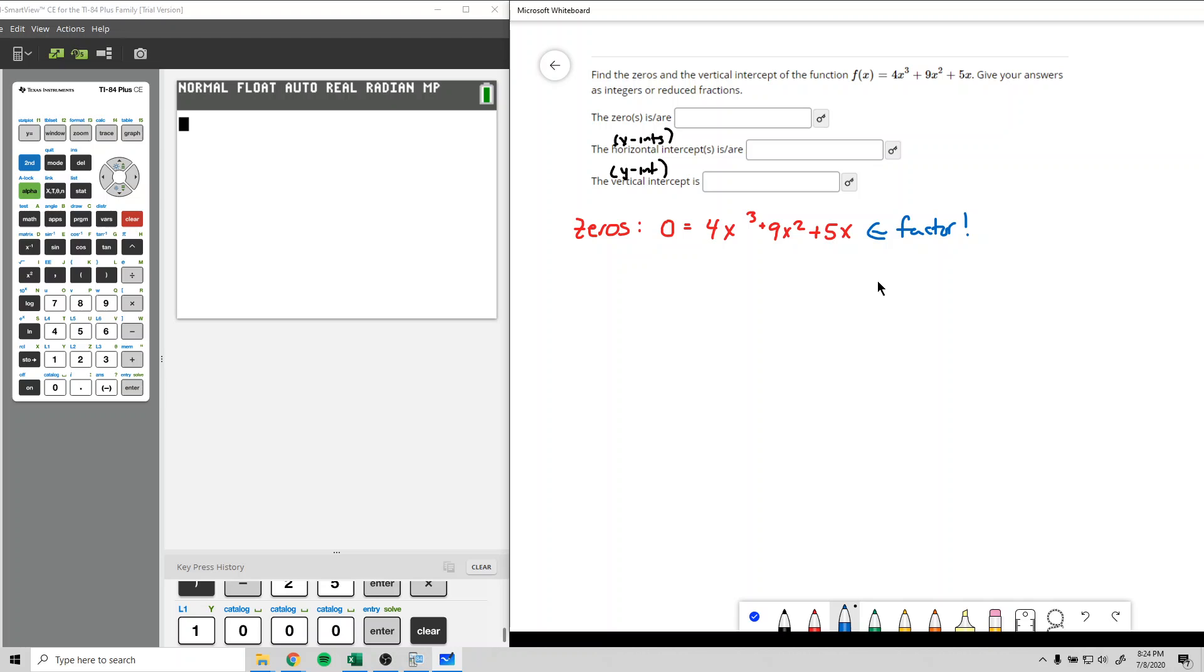We have different powers of x. First thing you want to notice here is that we have an x in common. Anytime you have a common factor, always take care of that first. We're going to factor the x out. When we take an x out of the first part, we got 4x squared. When we take an x out of the second part, we got 9x. And when we take the x out of the last part, we just have 5.